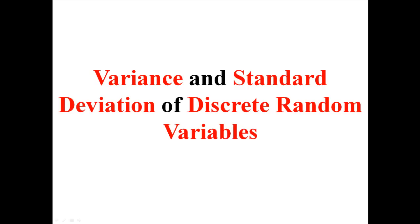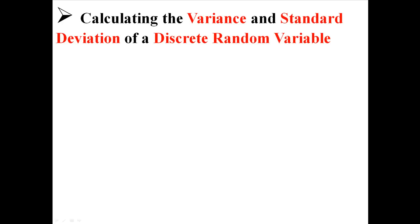In the previous lecture, I talked about calculating the mean for discrete random variables. Now we're going to talk about calculating the variance and the standard deviation of a discrete random variable. Remember that standard deviation is just the square root of the variance, so I'm going to explain how to find the variance, and that will lead us to finding the standard deviation.